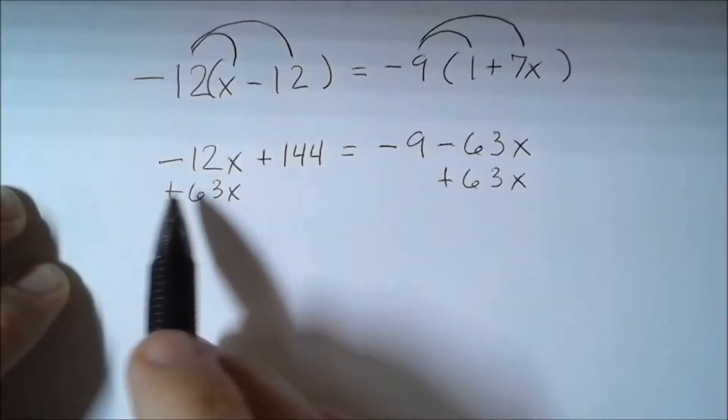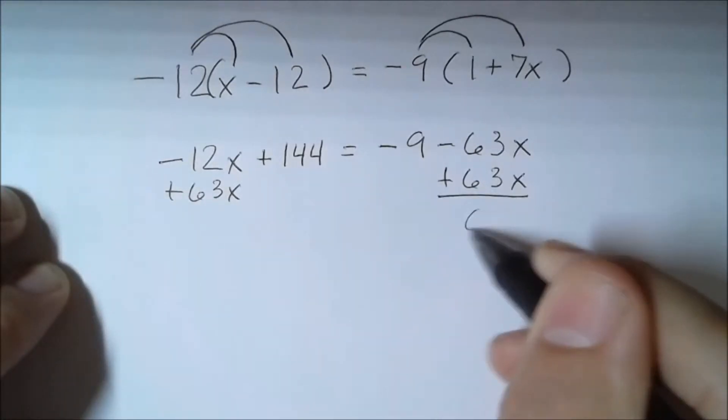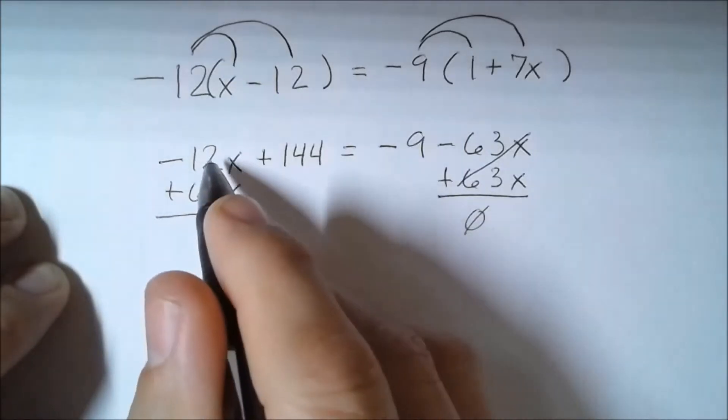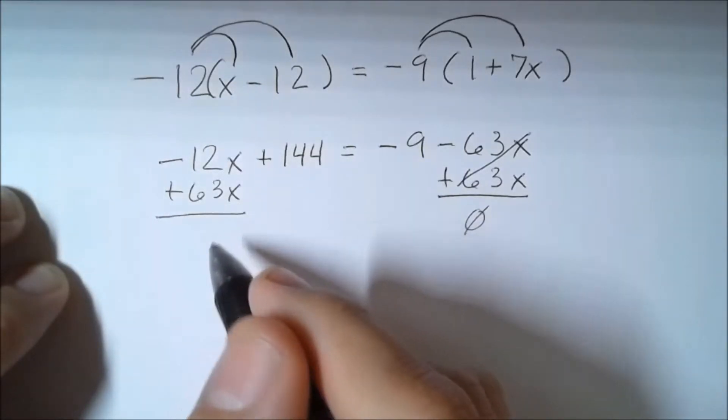So this is going to give me 0, so they cancel out. And then now if I take 12 away from 63, that's going to leave me with 51x, and it's positive.